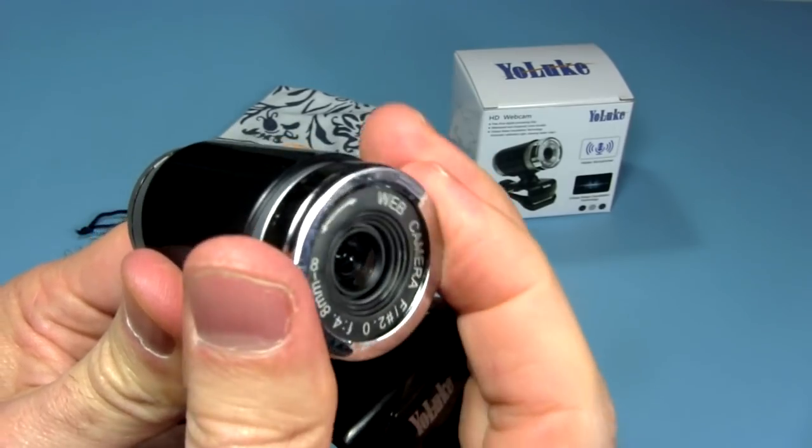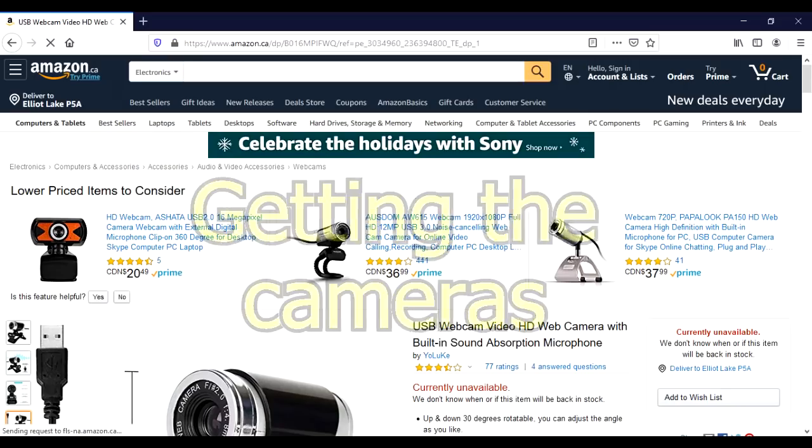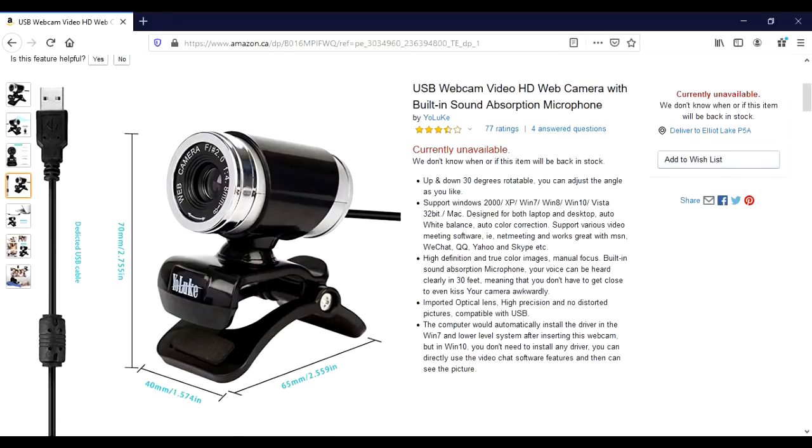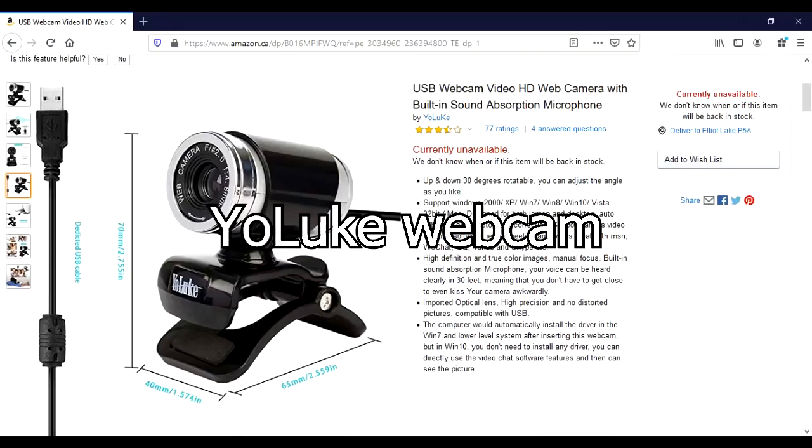They do have a manual focus though, but they also seem to have a decent depth of field at certain focus lengths. I bought the cameras from Amazon, and a link is in the video description. However, you can find them everywhere. Just search for Yolook webcams.